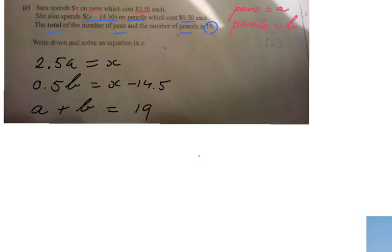I should write down one equation with the variable being X. But what do I have here? I have three equations with A, B, and X. That's not good enough, so I'm going to manipulate the situation a little bit. I can say A equals X over 2.5. I'm just changing the subject, dividing both sides by 2.5, so X over 2.5.